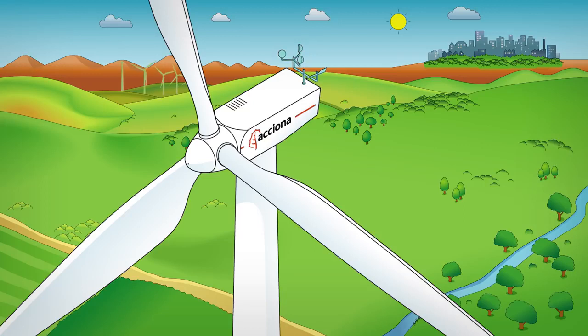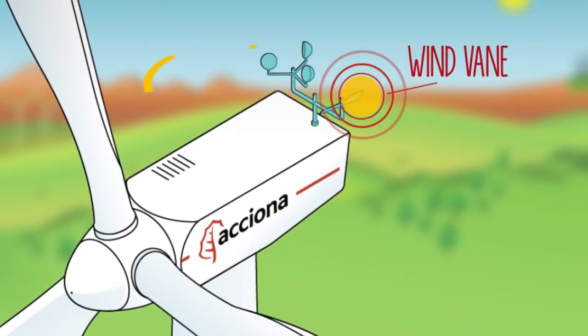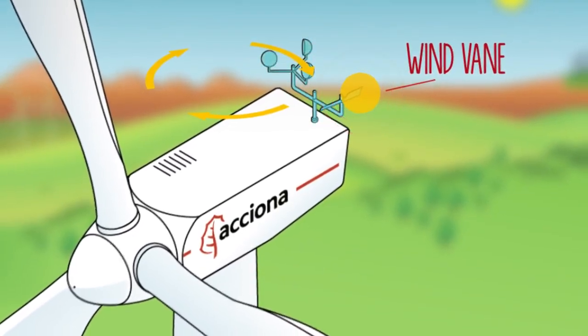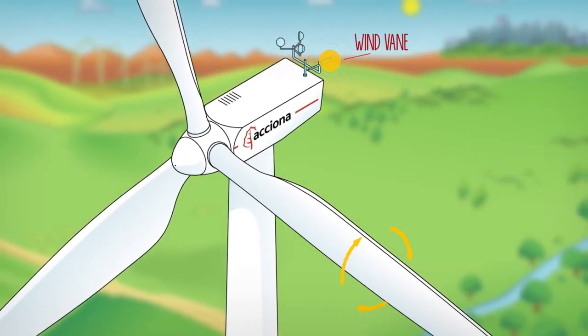Each wind turbine has a wind vane at the top that indicates the wind direction. This allows the turbine to rotate on the tower and face the wind. The blades also rotate on their axis for maximum resistance.